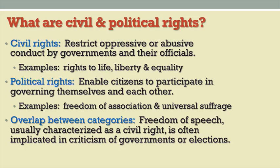Political rights, by contrast, enable citizens to participate in the political process and the process of governance. Well-known examples are the right to universal suffrage or voting and freedom of association. It's worth noting that these two categories of rights are not entirely distinct — there can be considerable overlap between them. For example, freedom of speech, which is a civil right, is very often used to criticize governments or elections, so in that sense it touches on both categories of rights.